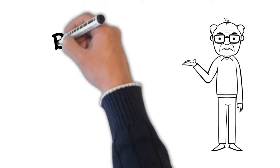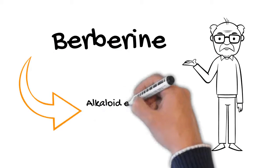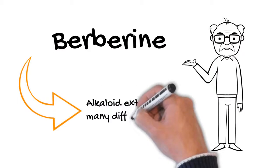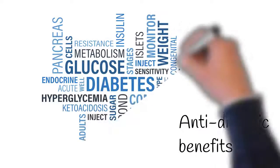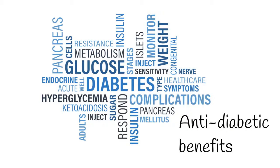Today we're gonna talk about berberine. This is a natural compound, an alkaloid, that is extracted from many different herbs. Now many people take it due to its anti-diabetic benefits, but does this natural compound bring any other benefits?